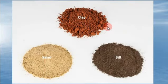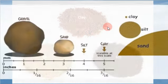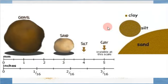Here's our sand, our clay, and our silt. Interestingly, the clay particles are the smallest. If we looked at a piece of gravel — which you can hold in your hand — then a grain of sand, then silt is that little dot right there. Clay you can't even see on this scale. So comparing sand to clay, you can see the difference.